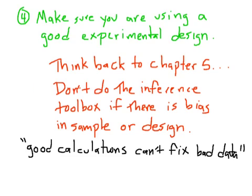This next idea, make sure you are using a good experimental design. Our conditions rely on things being a simple random sample, and think back to Chapter 5. We did a whole study on bias and different sampling designs and different experimental designs. It's not like you can just ignore all that and just plunge ahead with the calculations. Make sure you think about whether the data that you collected was actually done in the right way. There's a catchphrase where good calculations can't fix bad data. If the data is bad in some way, meaning biased, just mention that and then you're done with the problem. Don't forge ahead and do the procedure and report a statistically significant result if the data was biased to begin with.